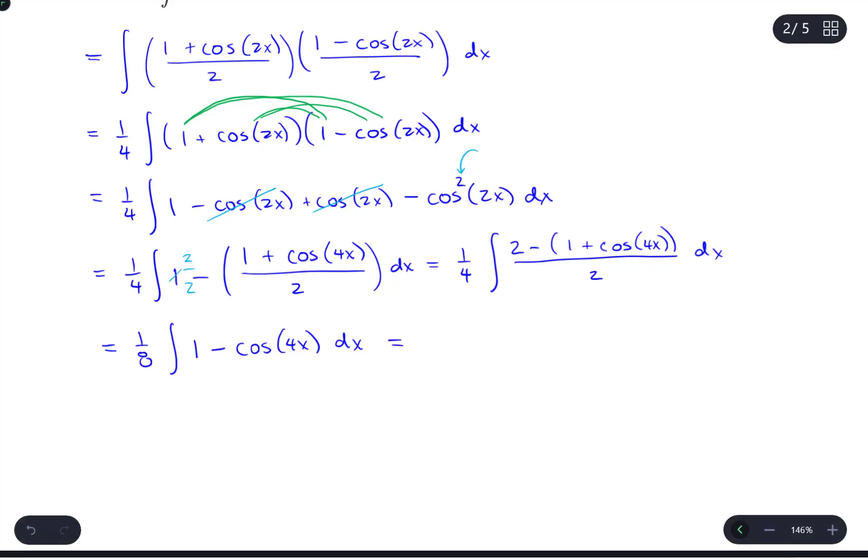Now we've got something we can integrate. This is going to be 1 eighth. The integral of 1 is just x. The integral of cosine will switch to sine. And because of this 4 here, it's actually going to be minus 1 fourth sine of 4x, and then plus C. So our final answer, if we wanted to distribute that 1 eighth, would be x over 8 minus 1 thirty-second sine 4x plus C. And there we have it.